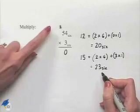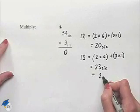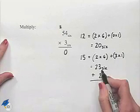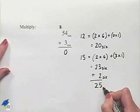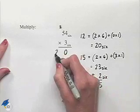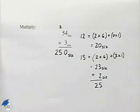But remember, we also have to add this 2 that we carried over in base 6 onto the 23. 2 plus 3 is 5, and we bring down our 2, and we end up with 25 in base 6, which carries over to our product, and our answer is 250 base 6.